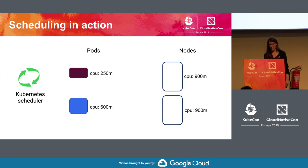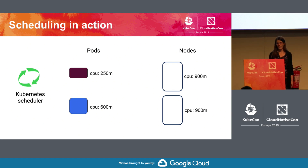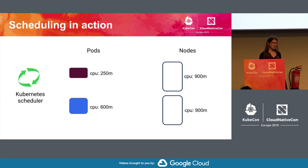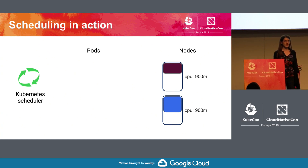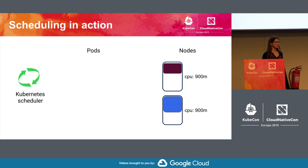We have a simple situation in our Kubernetes cluster: two nodes, currently empty, both with 900 milli-CPUs of space, and two pods waiting to be scheduled. One pod is requesting 250 milli-CPU, another is requesting 600 milli-CPU. So one pod goes to one node, one pod goes to the other node. At this moment the workloads use actually the amount of resources that they request, so workloads are happy — everything that should be running is running, and the workloads have the resources they need.